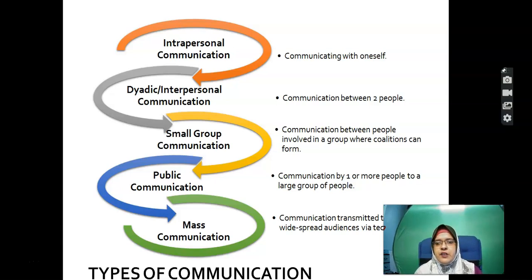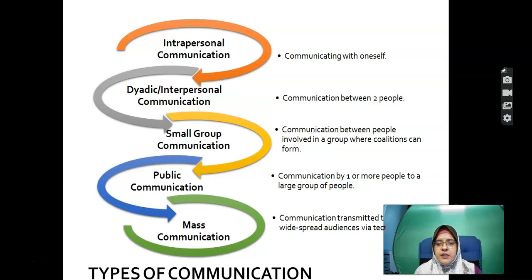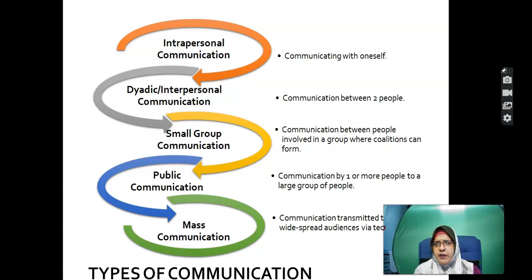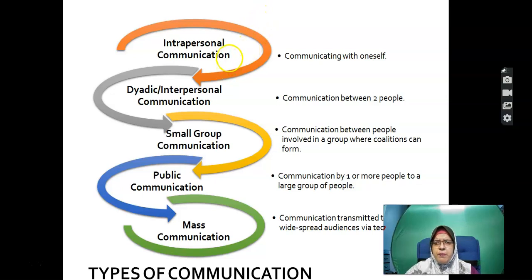Small group communication involves more than two people, where coalitions can form — for example, during a group assignment. Public communication involves one or more people addressing a large group. Mass communication means placing content on YouTube where everyone can view it, so we need to be very careful when choosing our words because people tend to misinterpret messages.